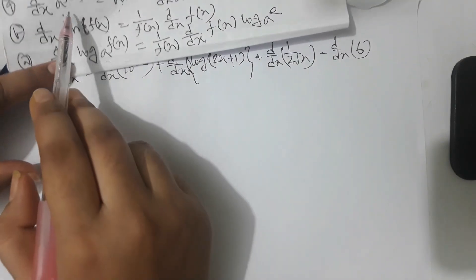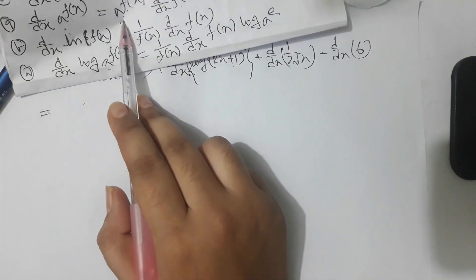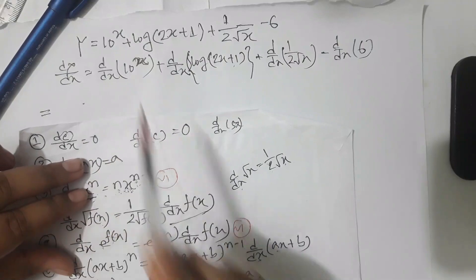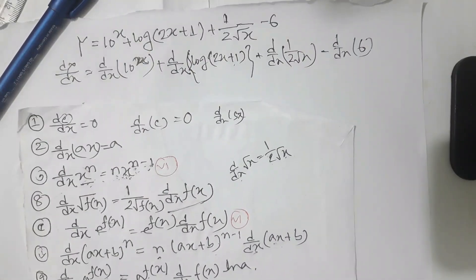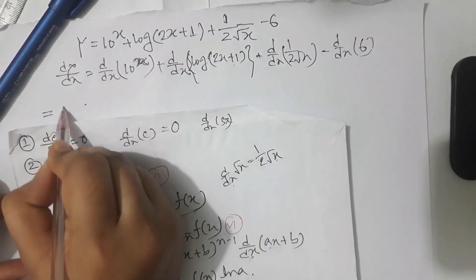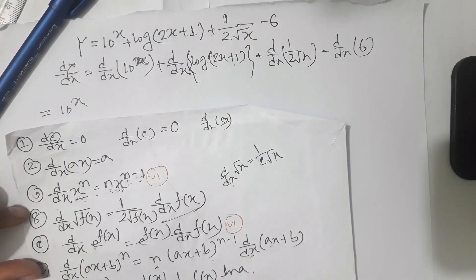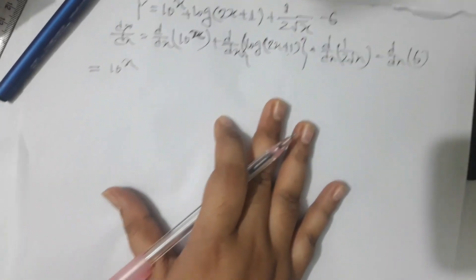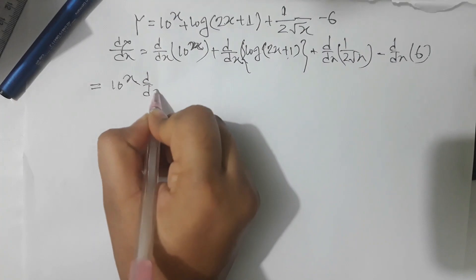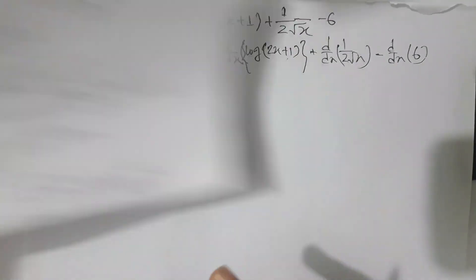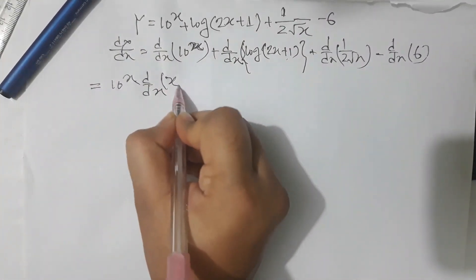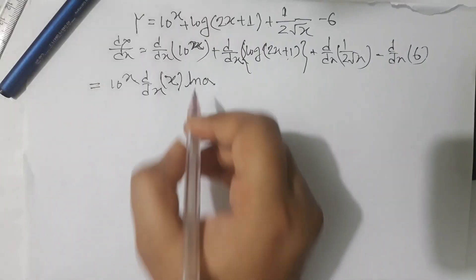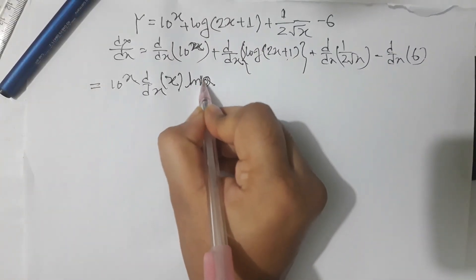Take a look at 10x. Take a look at the data: gdx, gdx plus f of x times ln x. f of x means x, then ln a. ln a means 10.